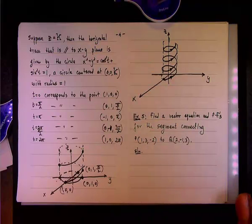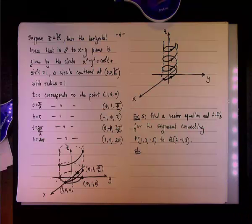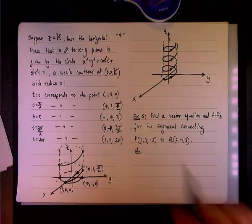We have two points, P and Q, with the following coordinates: 1, 3, negative 2 for P, and 2, negative 1, 3 for Q.